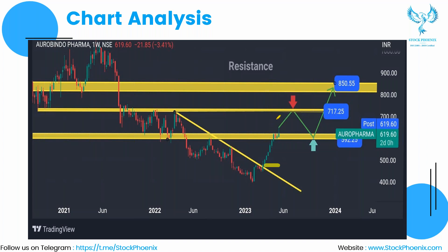Now, how we are fixing the nearby resistance — all three lines have been formed from consolidation zones. You can see this consolidation zone, and also the particular place where the highs got repeated within a range, and also during this particular reversal. Taking all these three levels, we have created the resistance zones. Now our candle is actually in the nearby resistance zone. The closure is above the resistance, so we are expecting a rally, maybe till 717.25.